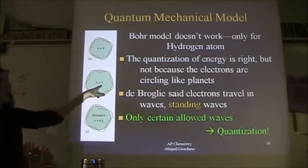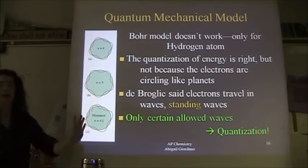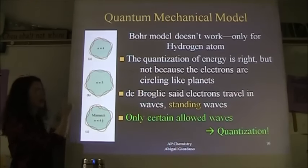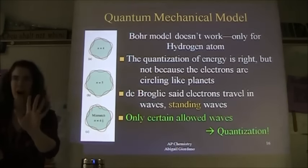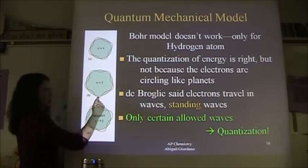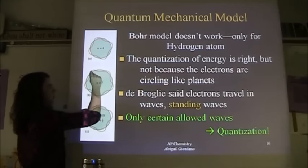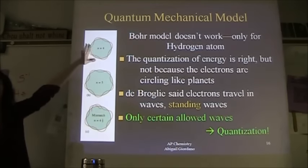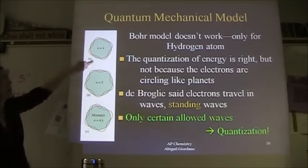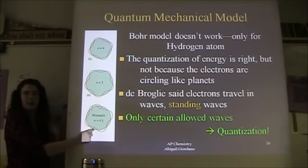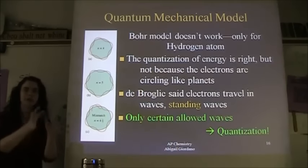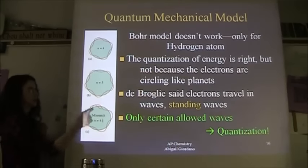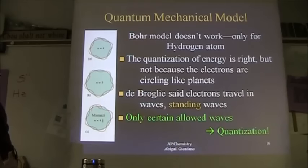The 'quantum' part of the name means whole numbers — set amounts. An electron on energy level 5 completes exactly five complete wave cycles as it goes around the nucleus: one, two, three, four, five. An electron on energy level 4 completes four complete wave cycles. Electrons will not complete fractions of cycles — only whole numbers. That's quantum. If you want to know more about this topic, go ask someone else.